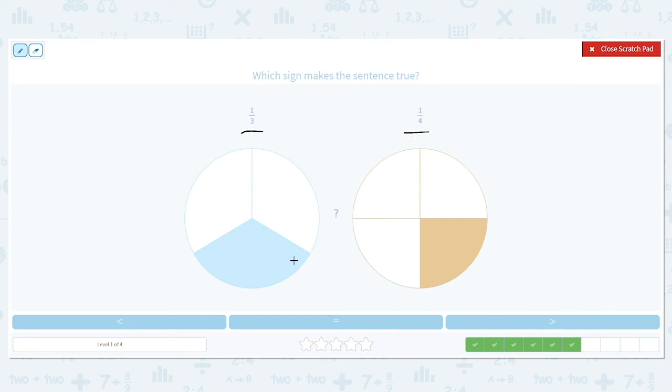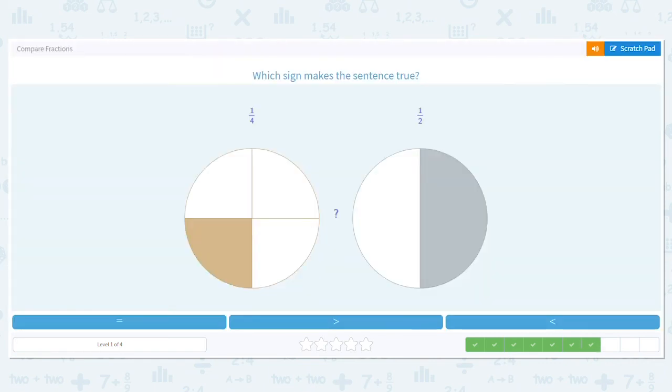You can even see here, it's a little bit easier to see, this blue shaded in piece is greater than that shaded in piece. So one-third is greater than one-fourth.